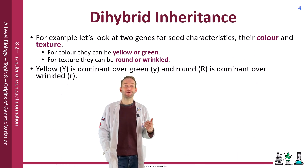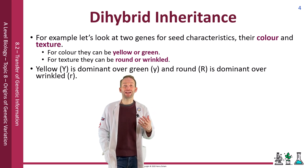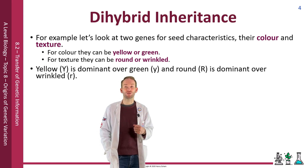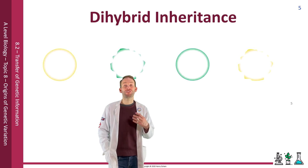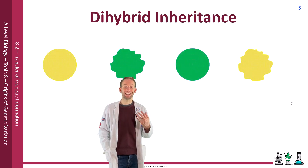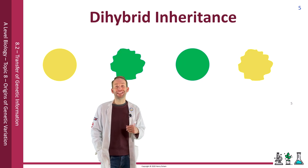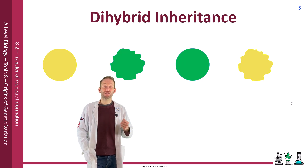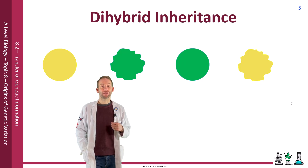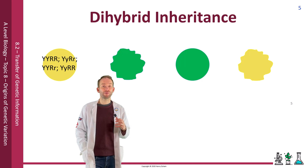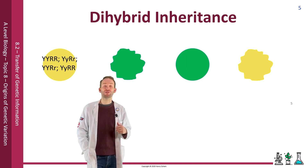For yellow and green we use capital Y and little y, with yellow being dominant over green. For round and wrinkled we use capital R, because round is dominant over wrinkled. So there are four different phenotypes. For round yellow, there are actually four different genotypes available — you must have capital Y and capital R, but each gene could be homozygous or heterozygous.